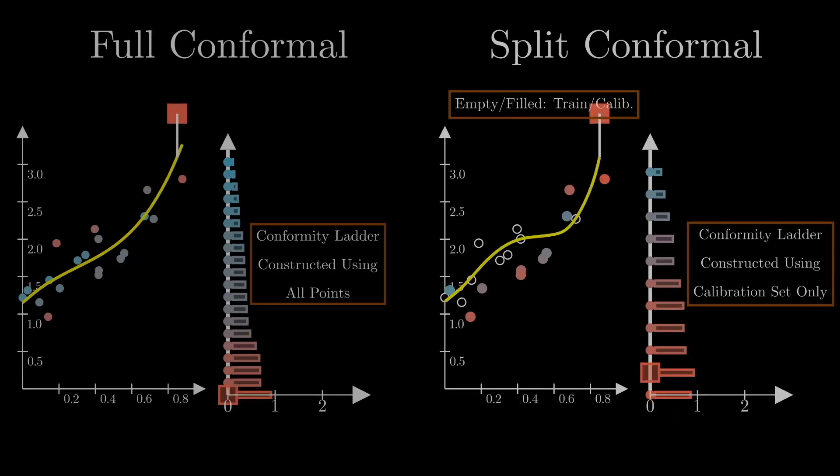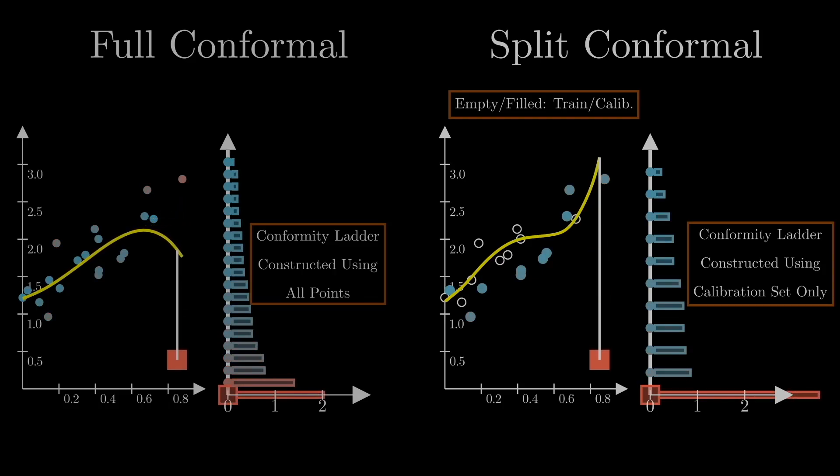Now that we are familiar with both full and split conformal methods, to make sure that we fully understand their difference without leaving any stone unturned, let's put the two methods side by side and compare their behavior as we examine different plausible values for the test point, the square, by moving it around.